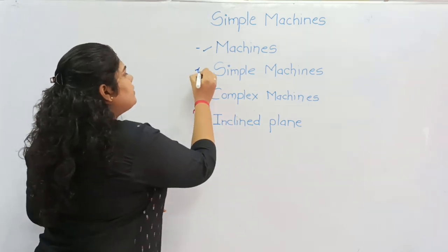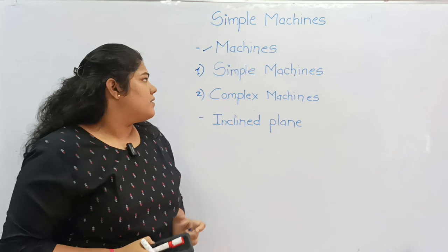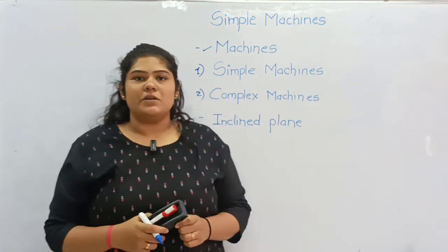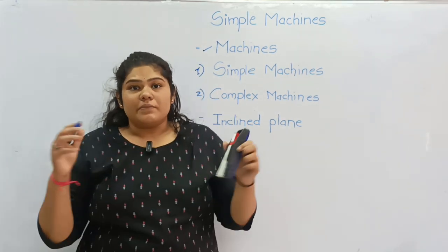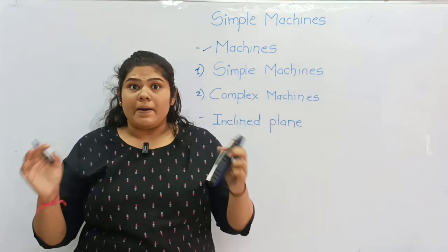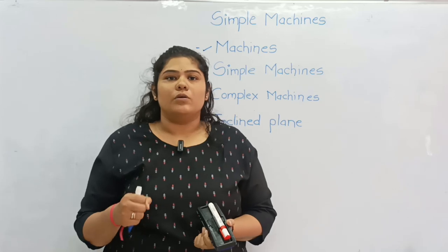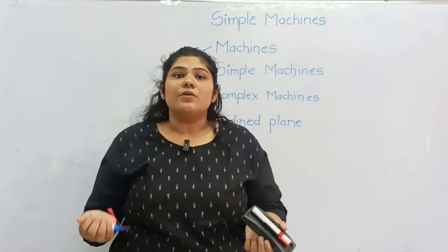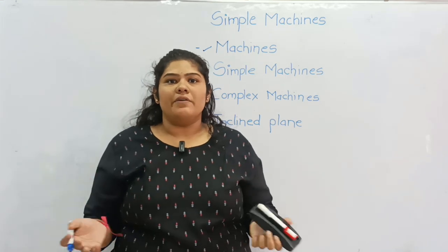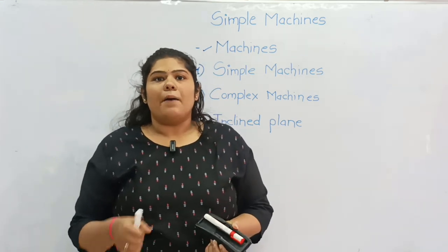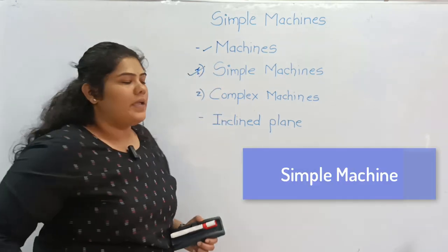There are two parts: simple machines and complex machines. What is called a simple machine? In the kitchen, there is a simple machine. We can easily use it — it is a simple machine.